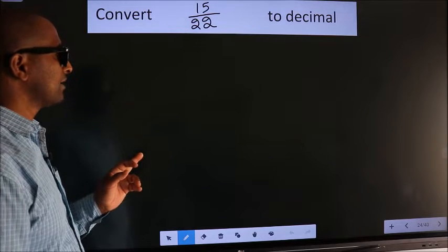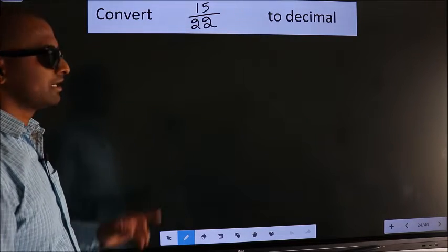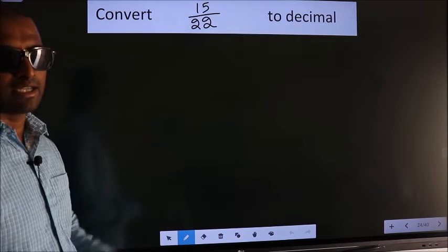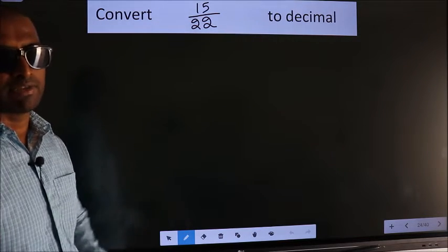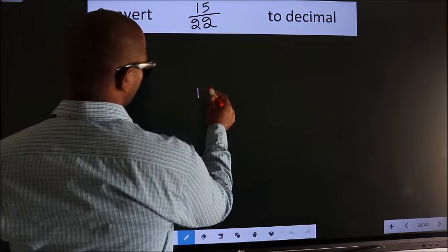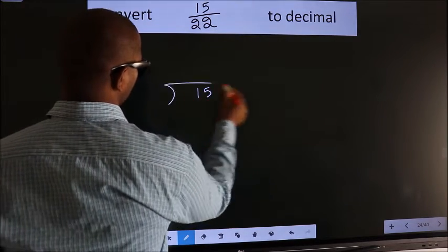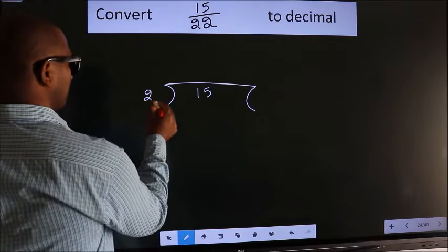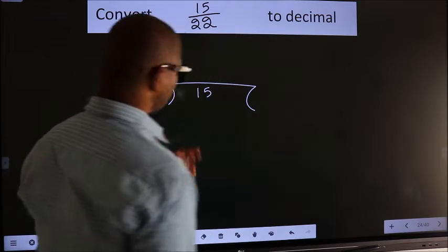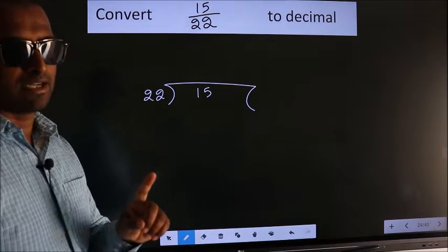Convert 15 by 22 to decimal. To convert this to decimal, we have to divide. And to divide, we should frame it in this way: 15 here, 22 here. This is your step 1.